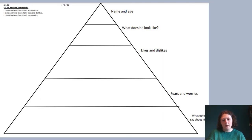So this is the character pyramid, which you might remember from when we did our writing about Bob, the man on the moon. So at the top it says name and age, and we know that Supertato, his name is Supertato, but we don't know how old he is. So that's when you could use your skills to work out how old you think he is, like we did for Bob. We don't know, but we could have a guess and write that in the box.